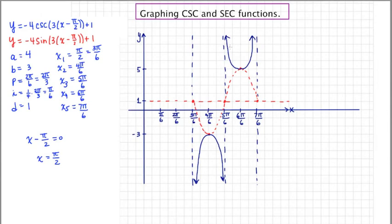That's it. So this is the graph of y equals negative 4 cosecant times 3 times x minus pi over 2 plus 1.